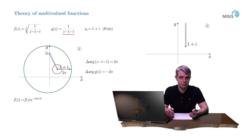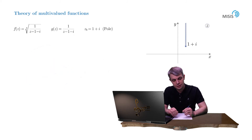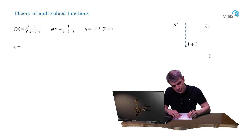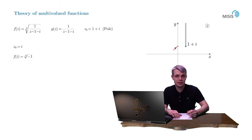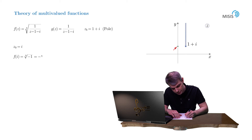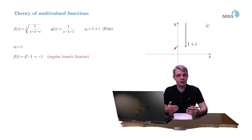Now our function is single-valued, but we still need to fixate a particular regular branch. As you remember, this is done by choosing the value of the function at some reference point on the complex plane. We pick the suitable point z₀ equals i. Then f of i equals the cubic root of negative 1, and we choose the simplest root, negative 1. This condition fixates our regular branch, and we can now define the value of our regular branch at any point on the complex plane.